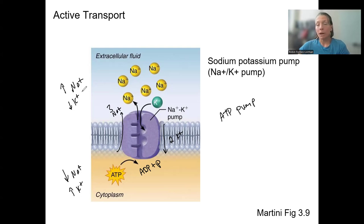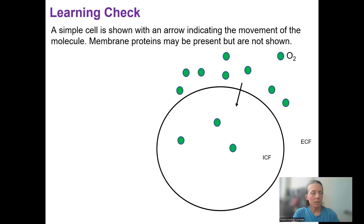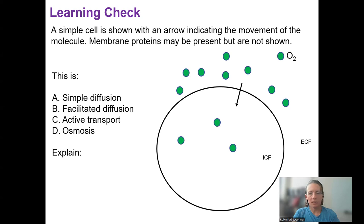So that's active transport requires ATP because we're not moving down the gradient. Okay. Let's do a couple of learning checks here. Here are your options and explain.